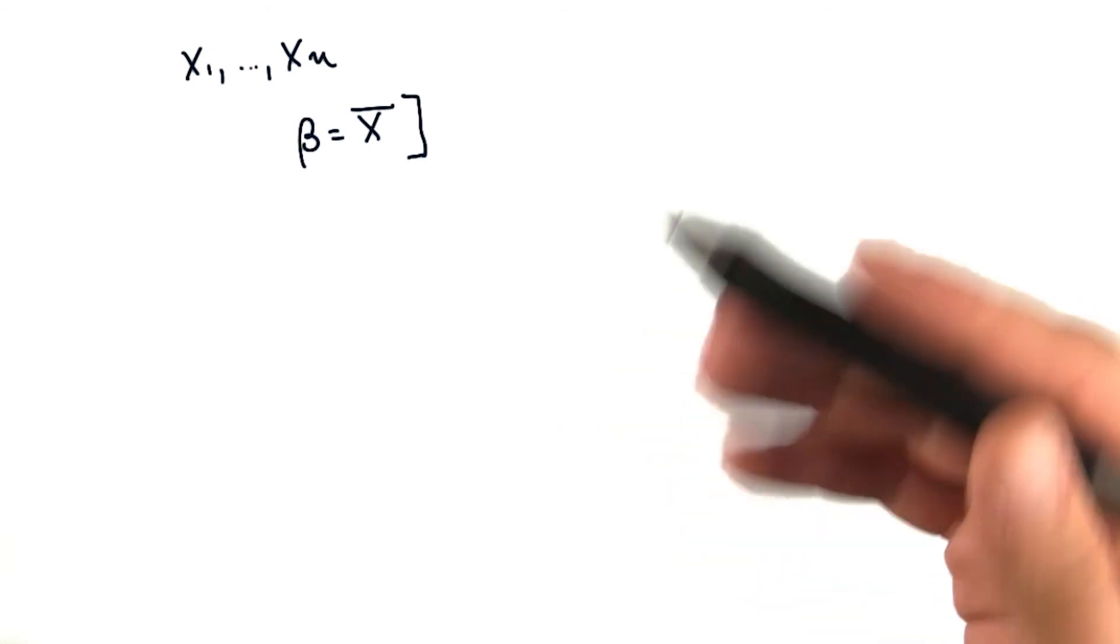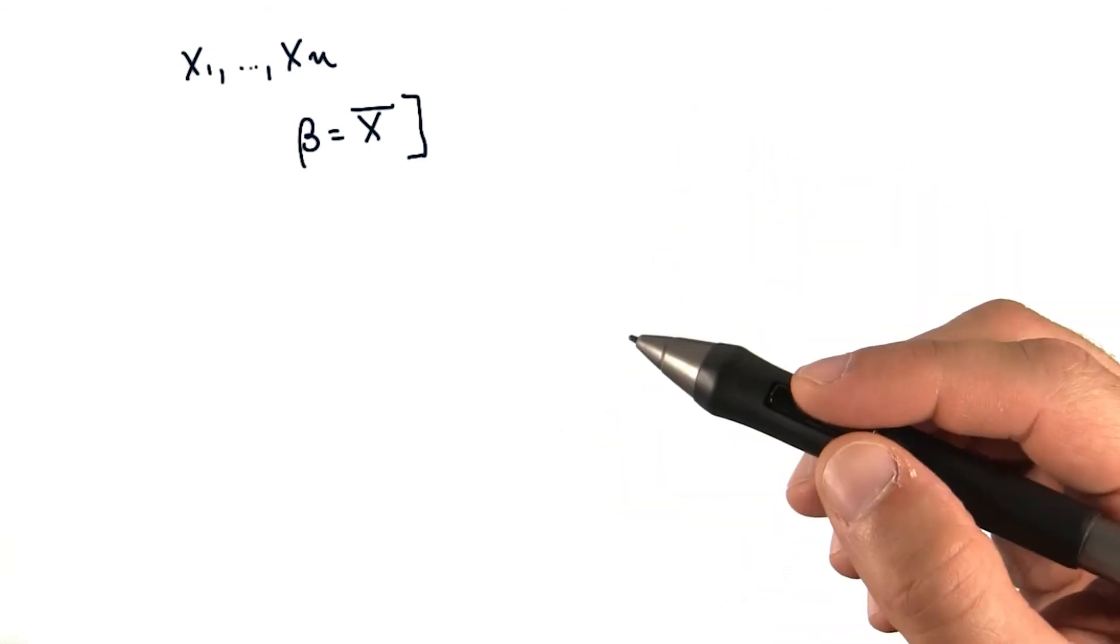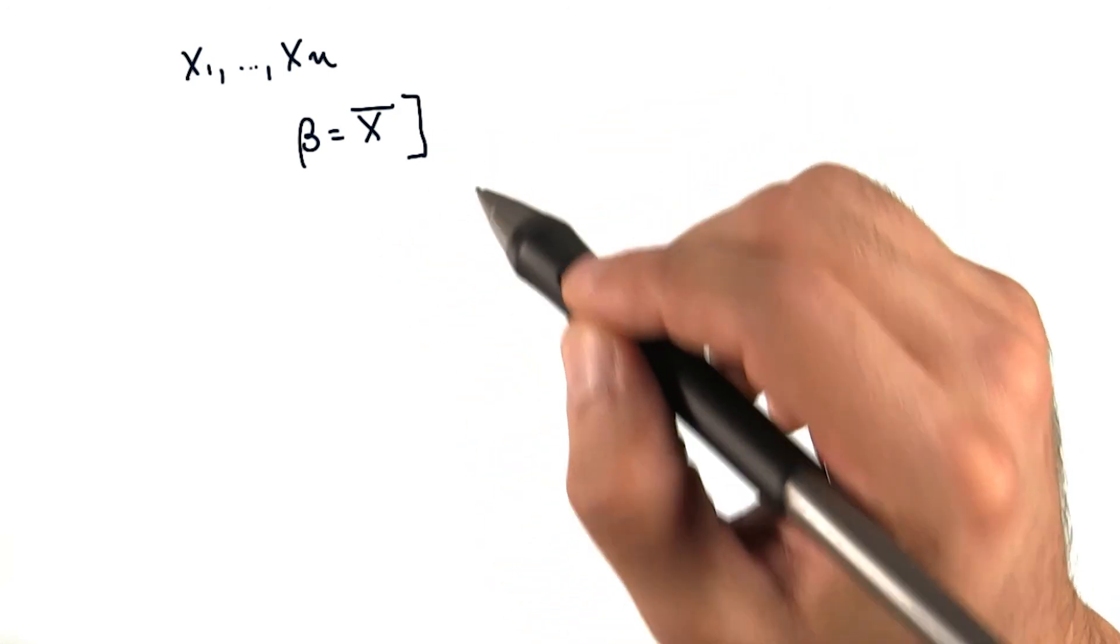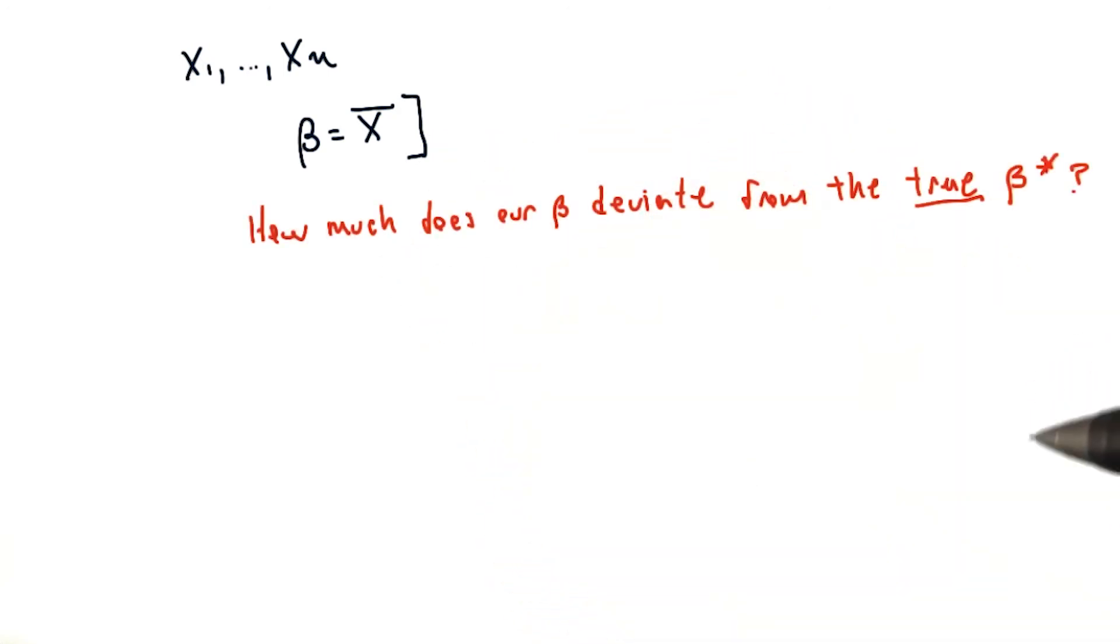Now, x bar itself is a random variable. And so we can reason about how much does the x bar that we've calculated deviate from the true beta value. And let's denote the actual beta value with a beta star.